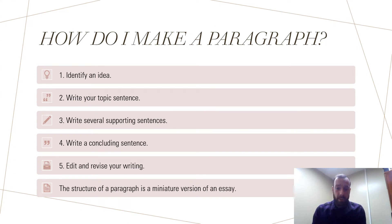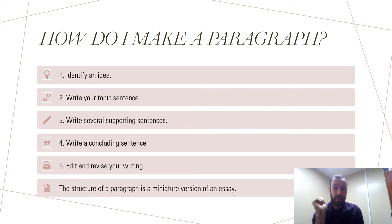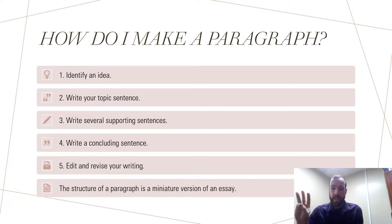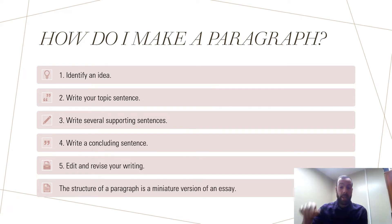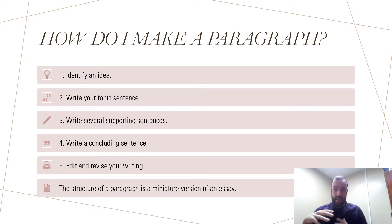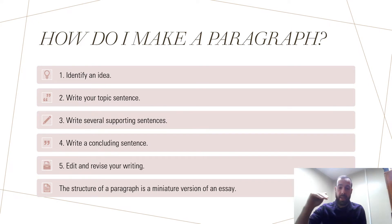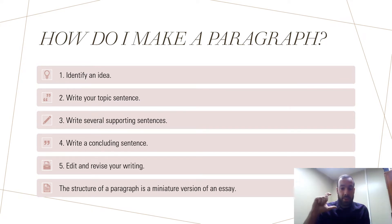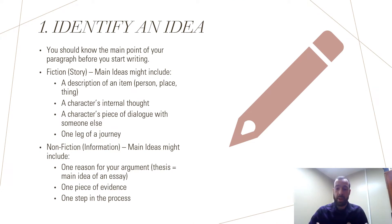I've broken writing a paragraph down into five simple steps. Step one: identify the idea — the central idea you're organizing your paragraph around, your topic for that group of sentences. Step two: write your opening sentence, which is your topic sentence. Step three: write several supporting sentences. Step four: write a concluding sentence to wrap everything up. Step five: go back, take a look at your writing, and edit and revise as needed. This structure is a miniature version of what an essay is — you introduce your topic, have several supporting ideas, then a conclusion to wrap everything up.